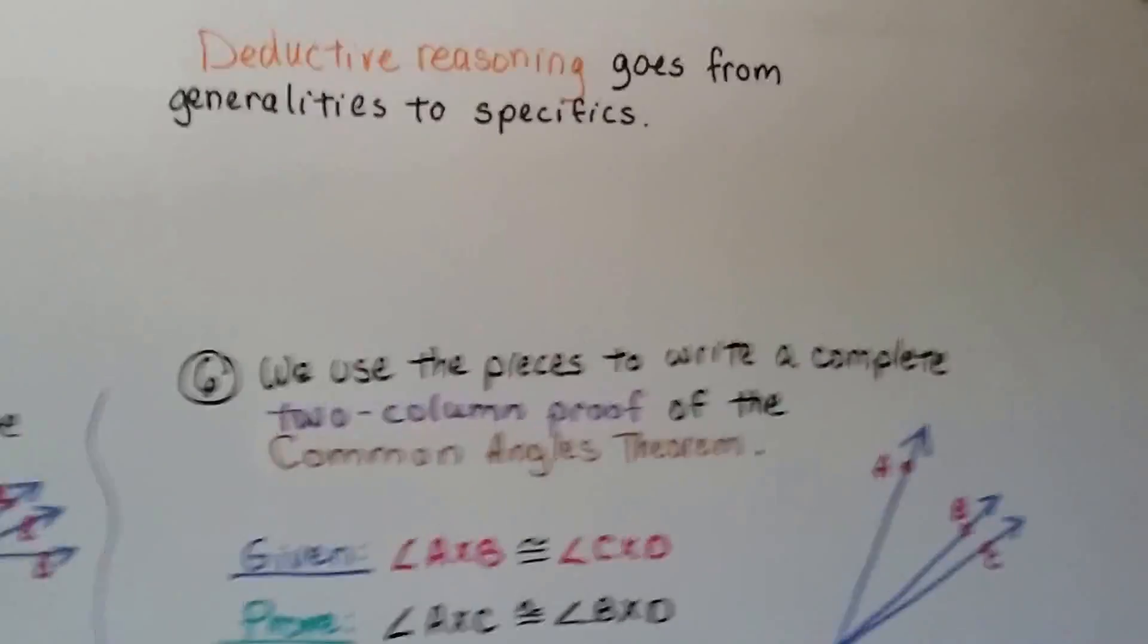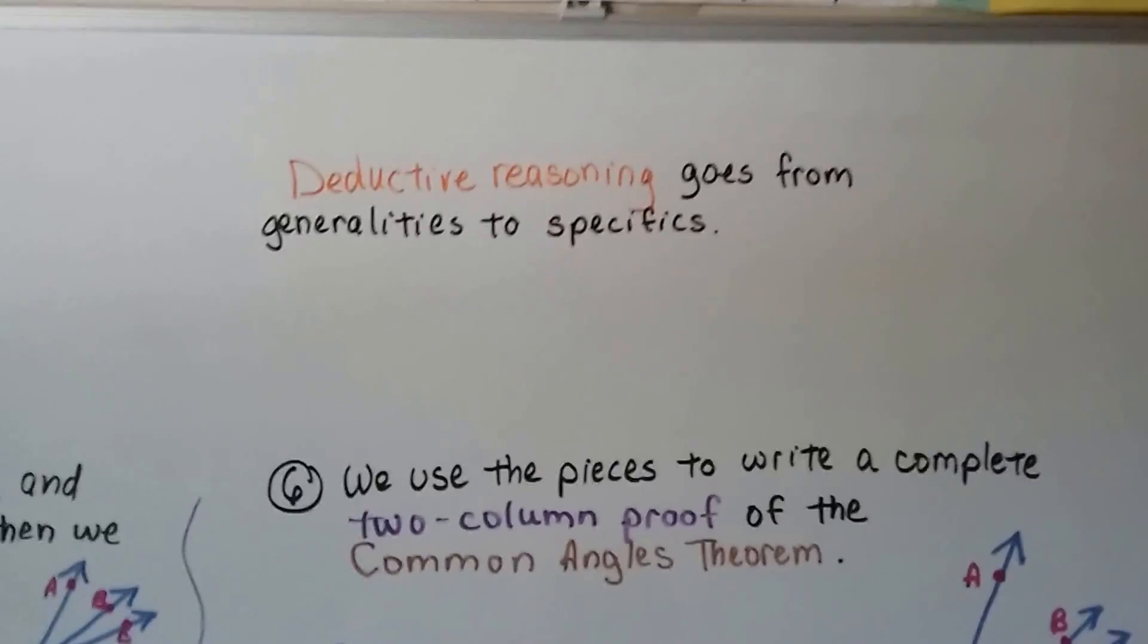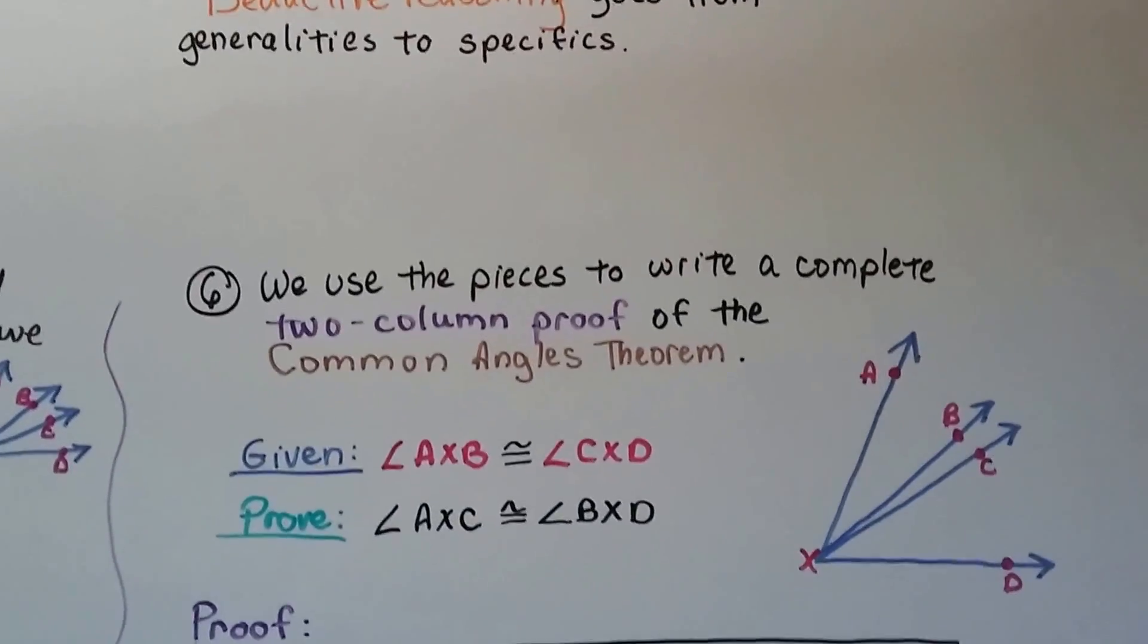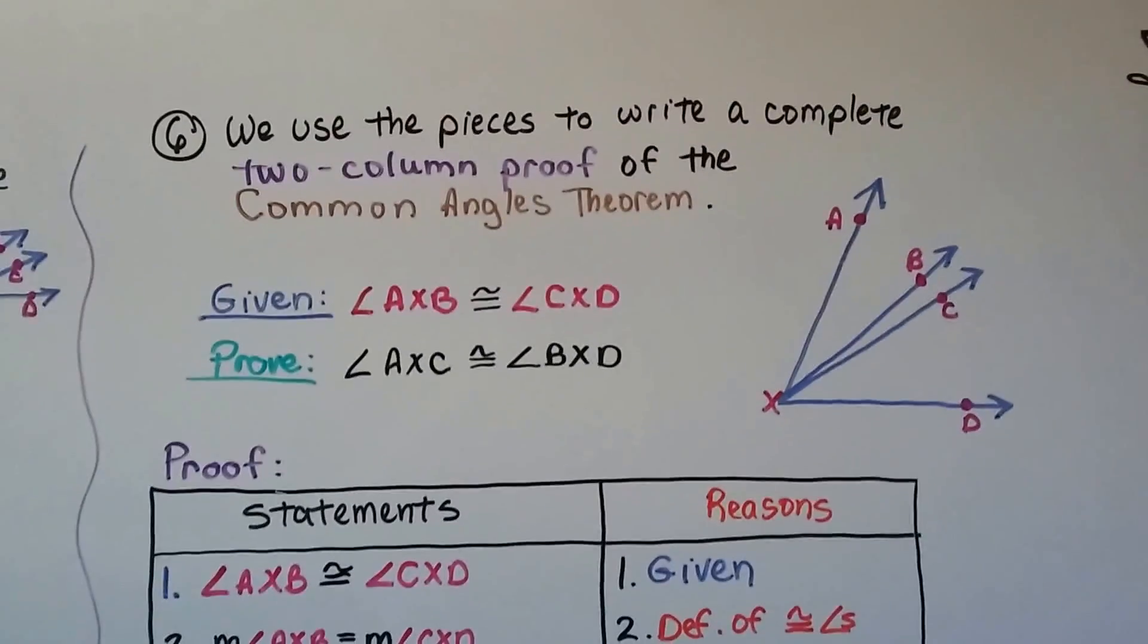Deductive reasoning goes from generalities to specifics. We go from general statements to specific reasons. And we use the pieces to write a complete two column proof of the common angles theorem.